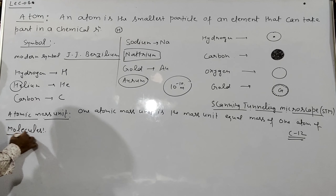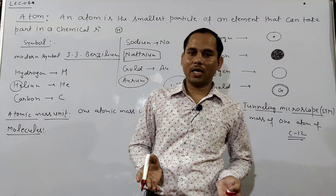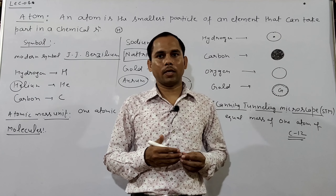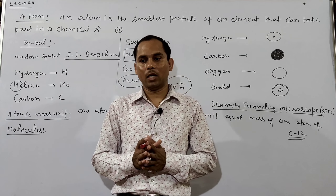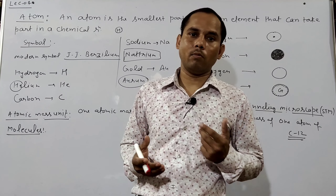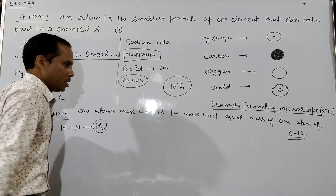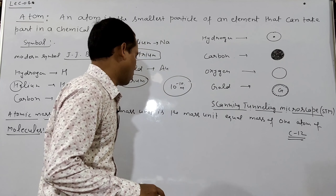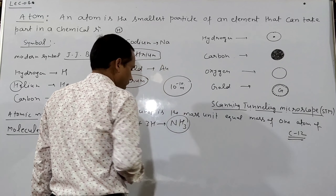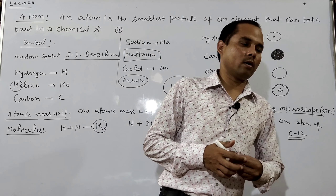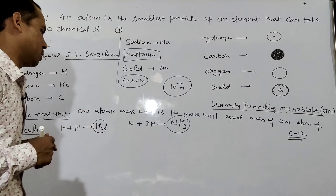Now let's talk about molecules. Molecules are formed by the combination of two or more types of atoms; they may be the same or different types. A molecule is a group of atoms. For example, H + H gives H2. Similarly, N + 3H gives NH3 — ammonia is a molecule.